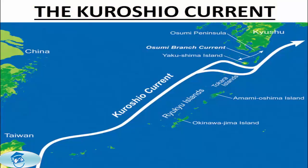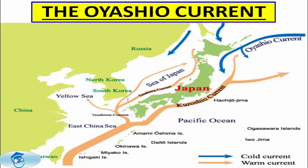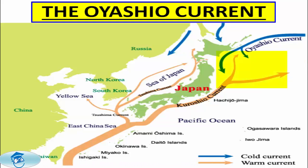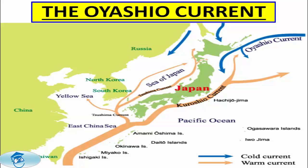The next current is the Oyashio Current — a cold sub-arctic ocean current that flows south and circulates counter-clockwise in the western North Pacific Ocean. It collides with the Kiroshio Current off the eastern shore of Japan to form the North Pacific Current. The waters of the Oyashio Current originate in the Arctic Ocean and flow southwards via the Bering Sea. This current has an important impact on the climate of the Russian Far East, mainly in Kamchatka and Chukotka.